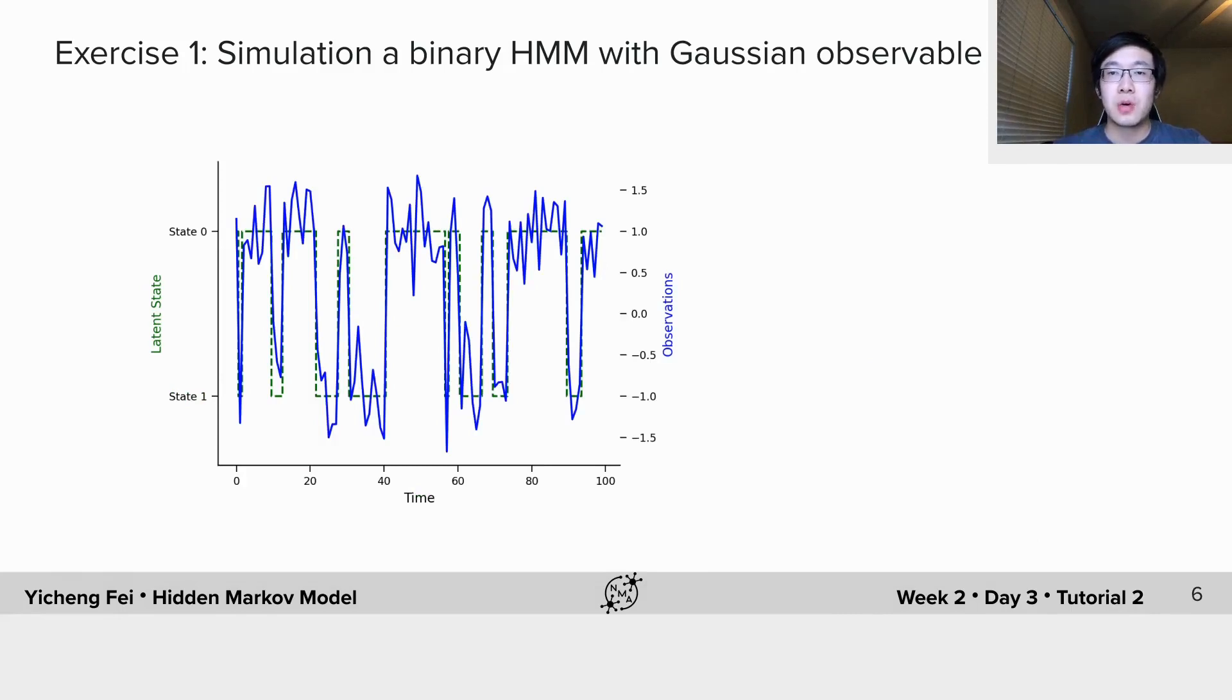After that, you will generate some sample sequences of states along with their measurements using our provided code and visualize them. Here is an example of the plot you will make. Please try different values of switching probabilities and noise levels, and see how the samples look like under different settings.